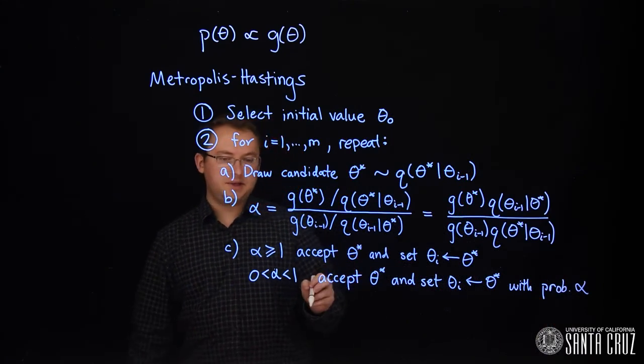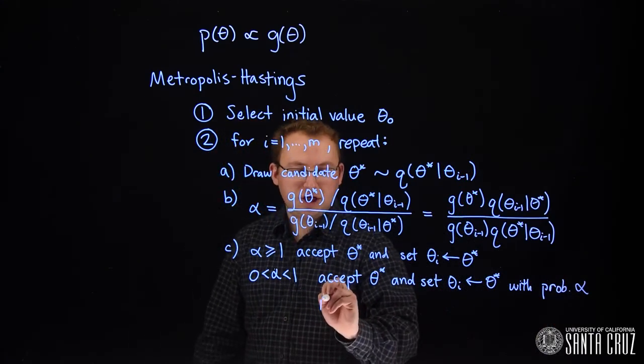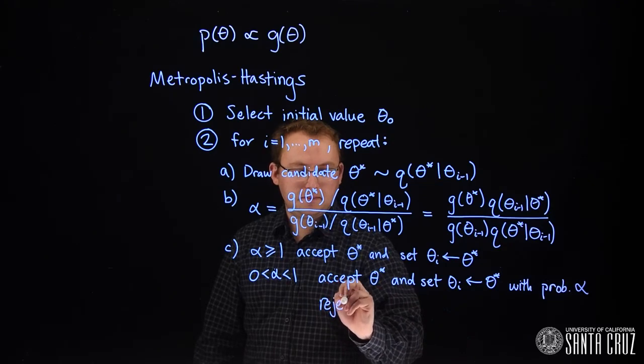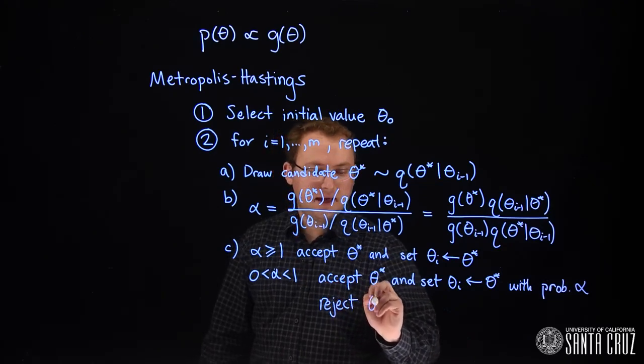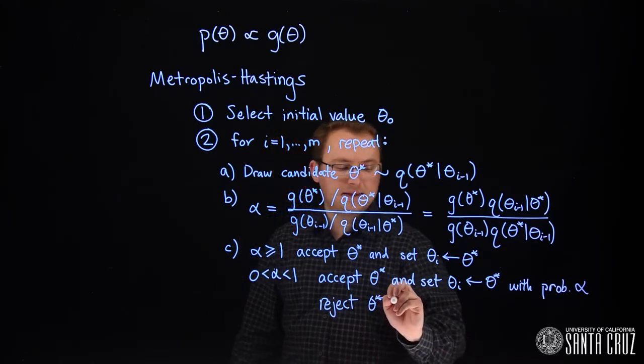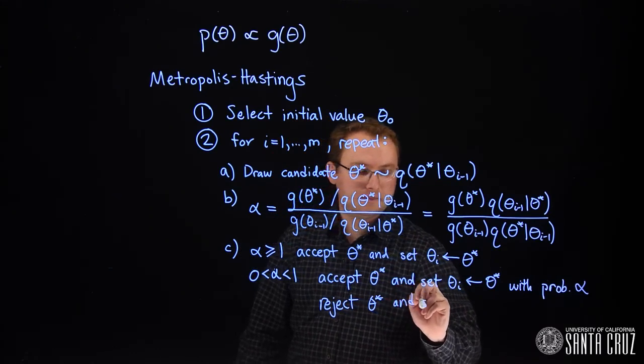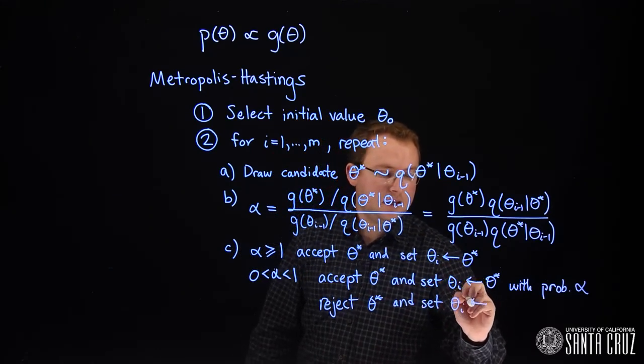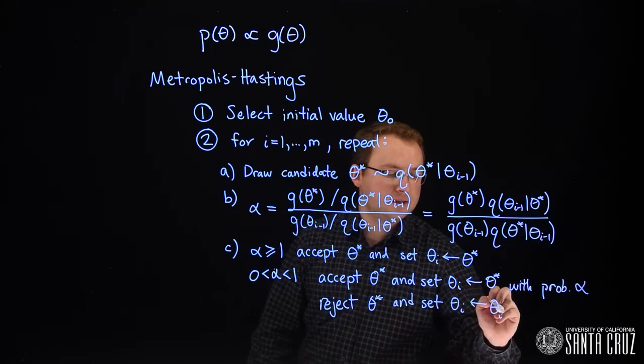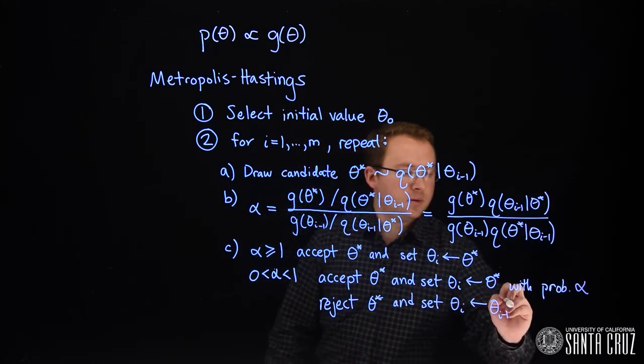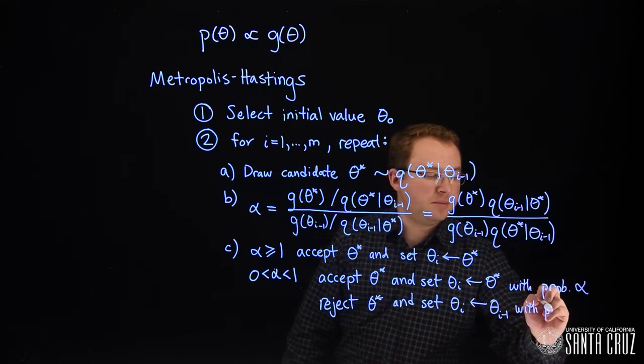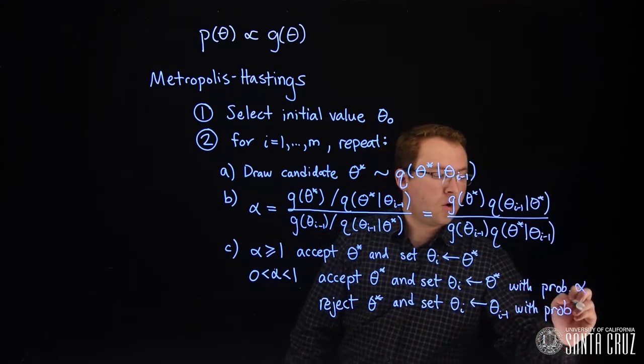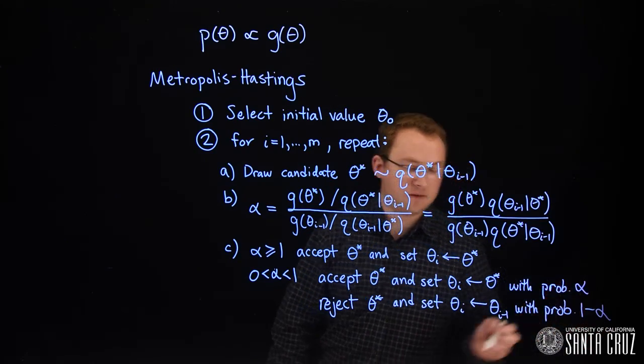Then the other possibility is to reject the candidate and set the current iteration of i equal to the previous iteration of i. And we do this with probability 1 minus alpha.